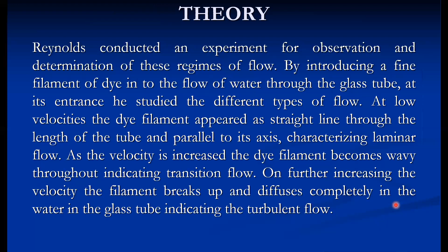Reynolds conducted an experiment by introducing a fine filament of dye into the flow of water in a glass tube at its entrance. At low velocity, the dye filament appears as a straight line through the length of the tube, parallel to its axis — he characterized this as laminar flow. As velocity is increased, the dye filament becomes wavy, indicating transition flow. Further increasing velocity, the filament breaks up and diffuses completely in the water, indicating turbulent flow.